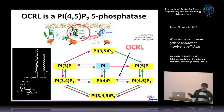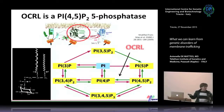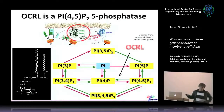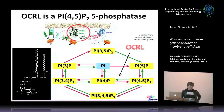PI(4,5)P2 is perhaps the most well known of these phosphoinositide species — the famous PIP2 recognized as a very important phospholipid in the membrane, because it is the precursor of IP3 and diacylglycerol. When cleaved by phospholipase C, it gives rise to important second messengers. There is also PI(3,4,5)P3, the product of PI3 kinase, which is very important in controlling cell growth.